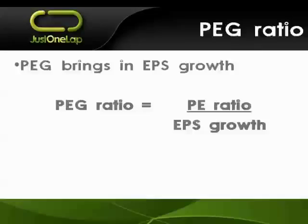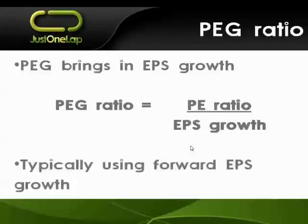We've had stocks in the past sitting on PEs in excess of 100. There are stocks on our market at the moment with PEs in excess of 20, which traditionally would be looked at as expensive. But if they're growing fast enough, that PE ratio is not a problem. So we use earnings growth — we would typically use a forward earnings per share growth, looking at consensus data from INET or most online stock brokers, which offer consensus data on about the top 100 shares.